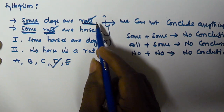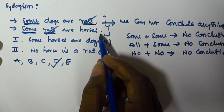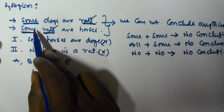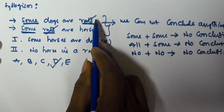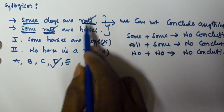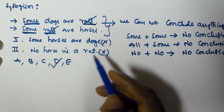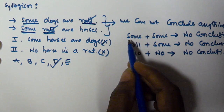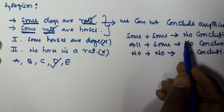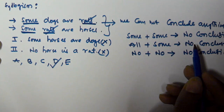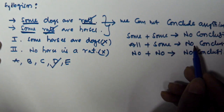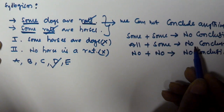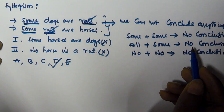Why? Because we cannot conclude anything from these two statements — both start with 'some' and 'some', and the predicate of the first is equivalent to the subject of the second. According to the rule, some plus some gives no conclusion. I hope you got this one. Thank you very much for watching, and please subscribe to my channel.